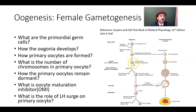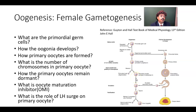The progression of the primary oocyte to the secondary oocyte is actually inhibited by the oocyte maturation inhibitor (OMI). This ovulation happens only after puberty, and not all primary oocytes will start to mature at the same time — only 10 to 20 will mature during the same cycle.